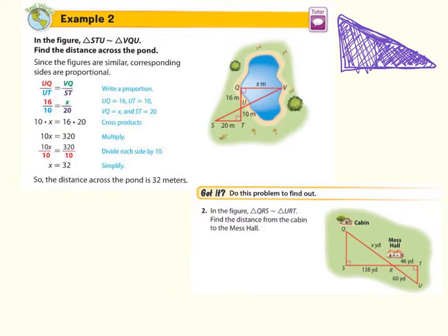Let's jump down to got it question number two. It says that triangle QRS is similar to triangle URT. So therefore, the corresponding sides, 46 is corresponding with 138. Therefore, the 60 is corresponding with X. So we're going to set up a proportion in that aspect. So I'm going to say 46 yards to 138 is equal to 60 yards to X. So I'm going to cross multiply 138 times 60. I'm going to get 8,280, and that equals 46 times X. So then the last step I need to do is to divide by 46. So the distance from the cabin to the mess hall is 180 yards.